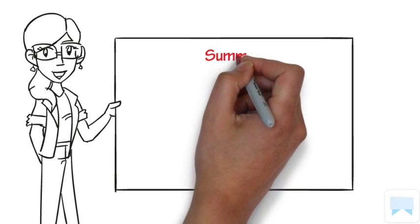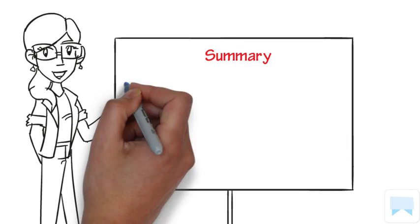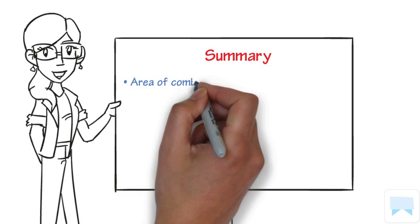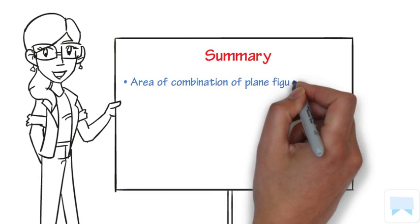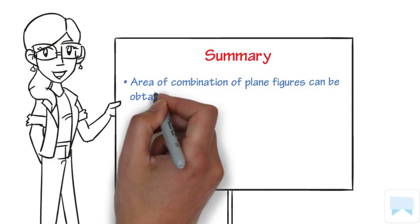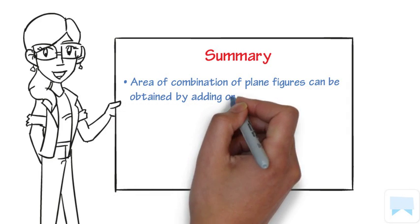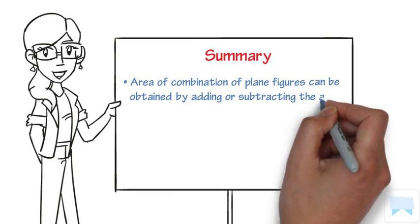Now let's summarize what we have learned. Area of combination of plane figures can be obtained by adding or subtracting the areas of individual plane figures in the combination.